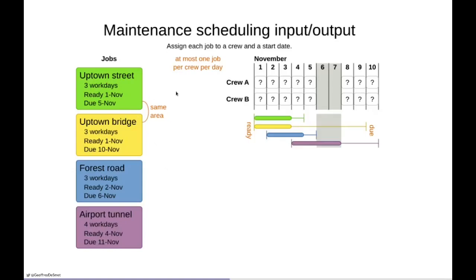The jobs also have a ready date and a due date. The ready date is the earliest starting date and the due date is by when it should have ended. For example, the green uptown street job has a ready date of the 1st of November. If we start on the 1st of November and it takes three days, it will finish by the 4th — that's fine because it's only due until the 5th. End dates and due dates are exclusive while ready dates and start dates are inclusive. If we start at the 3rd of November, it will not be finished in time, violating the due date — a hard constraint we don't want to break. All of these jobs have ready and due dates, giving you a glimpse of how much flexibility we have per job.